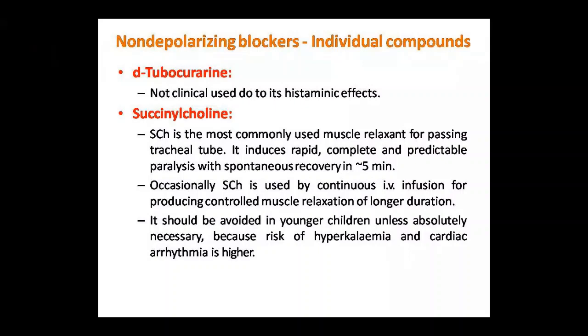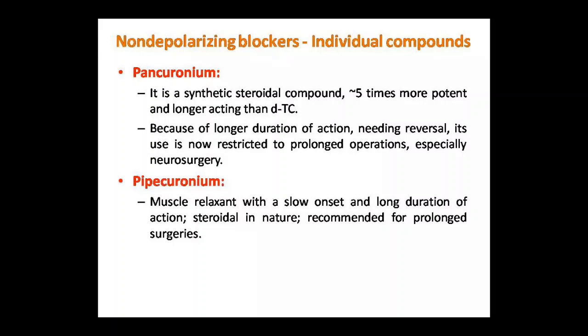Transient apnea dekha jaata hai agar SCH ka action peak par ho ya koi person liver disease ya atypical pseudo-cholinesterase ke genetic defect ki wajah se succinylcholine ka metabolism slow ho jaye. Isse severe neuromuscular blockade aur prolonged apnea ho sakta hai - ise succinylcholine apnea kehte hain. Ye ek respiratory paralysis hai jiska koi antidote available nahi hai, isliye fresh frozen plasma infuse karte hain aur patient ko artificially ventilate karte hain until full recovery.